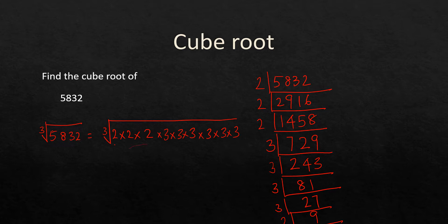For every group of three identical factors we take one outside. We have one group of three 2s (giving one 2) and two groups of three 3s (giving two 3s). So the answer is 2 × 3 × 3 = 18. The cube root of 5832 is 18.